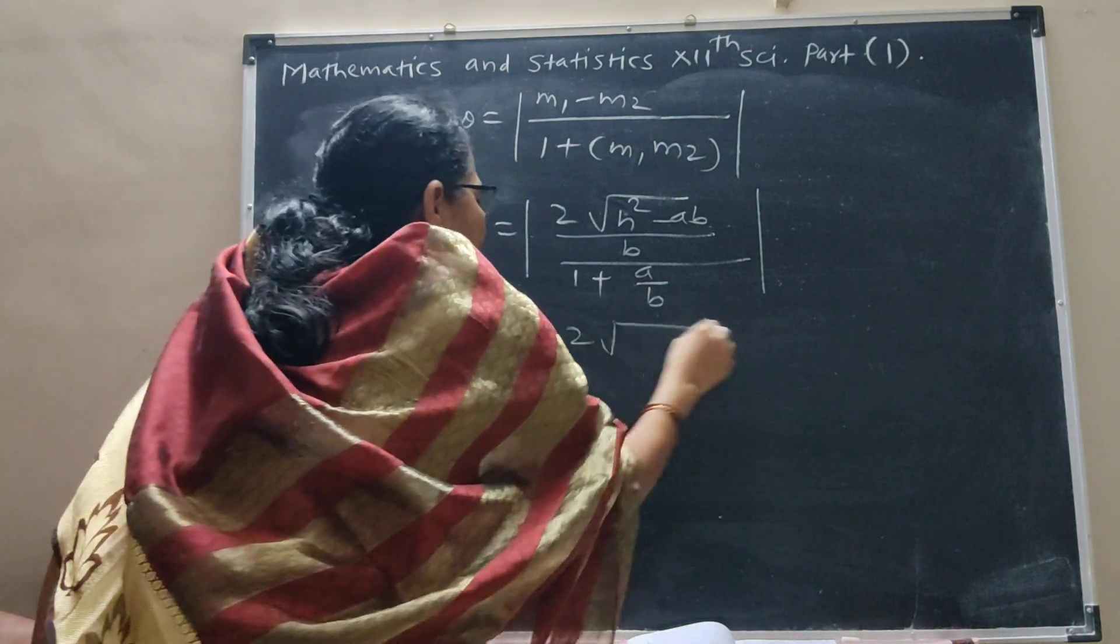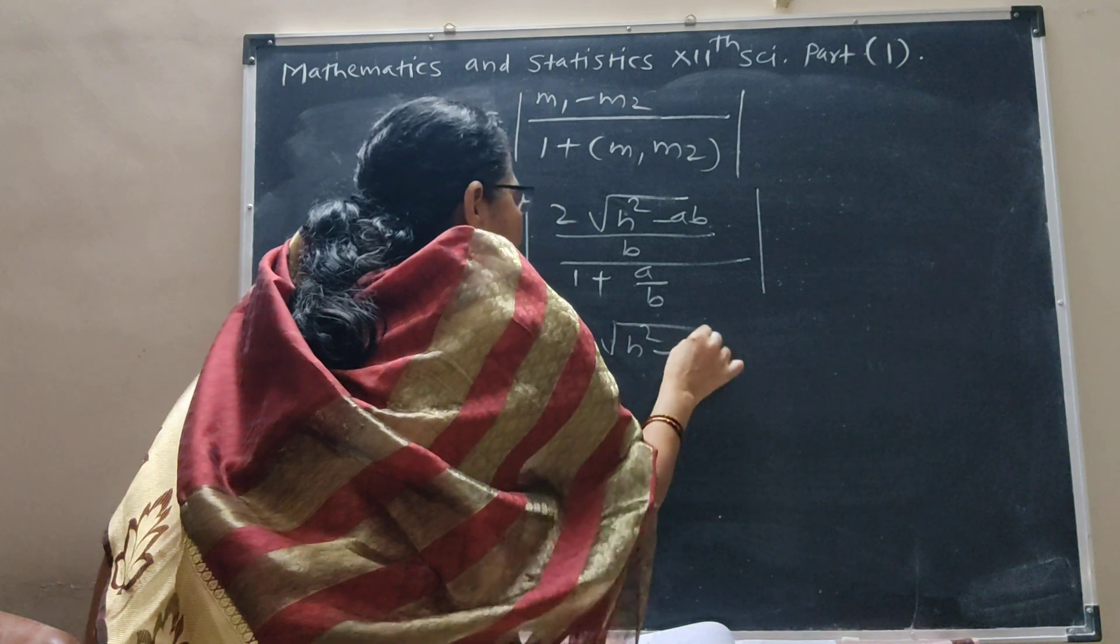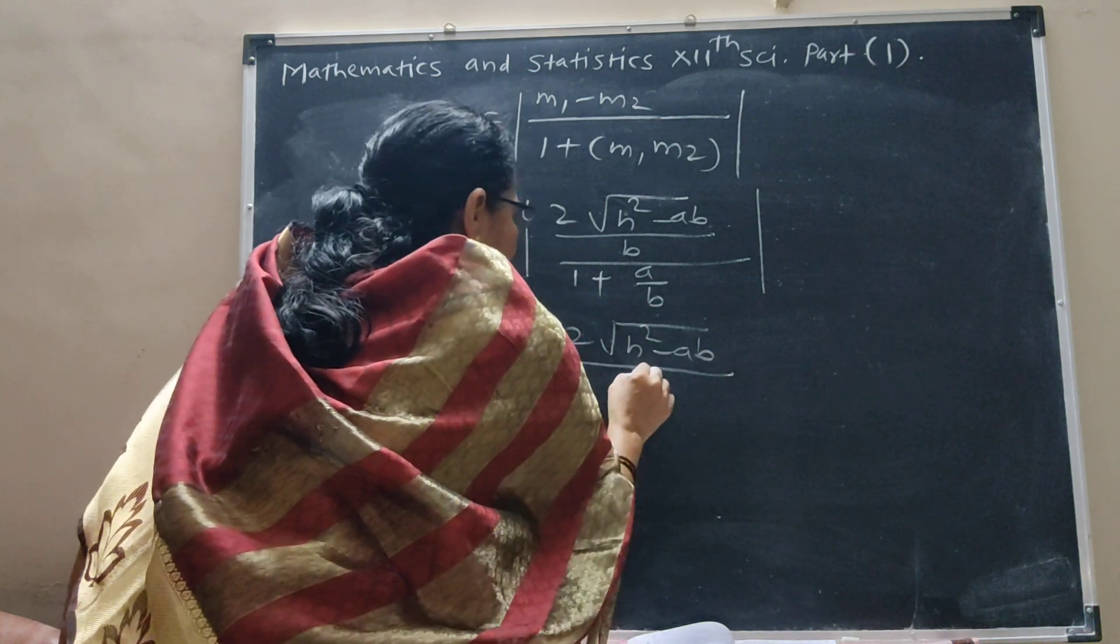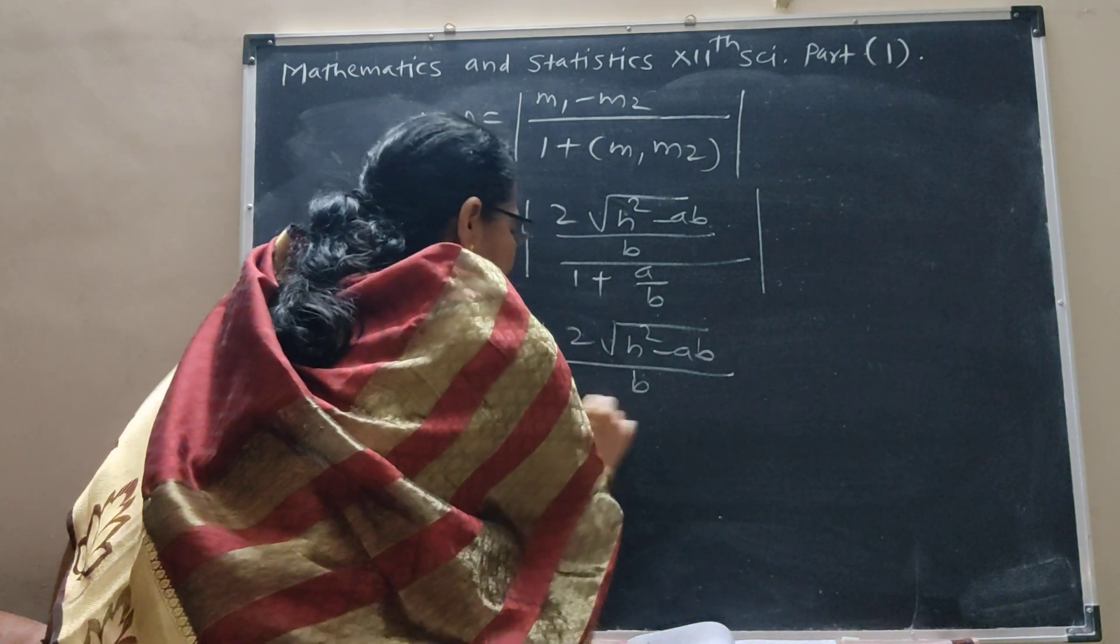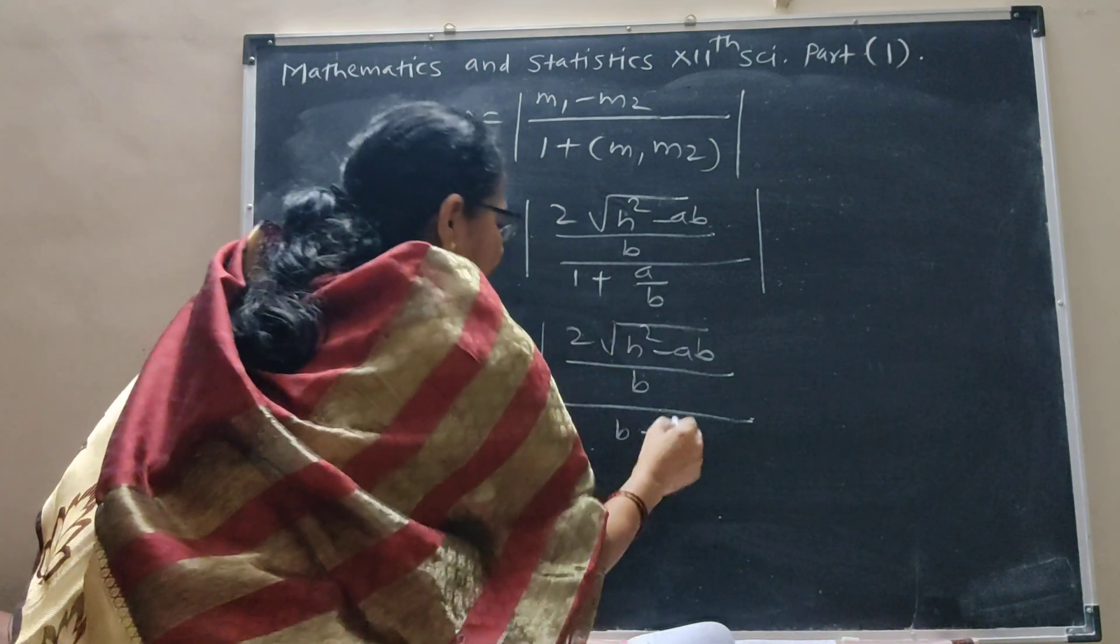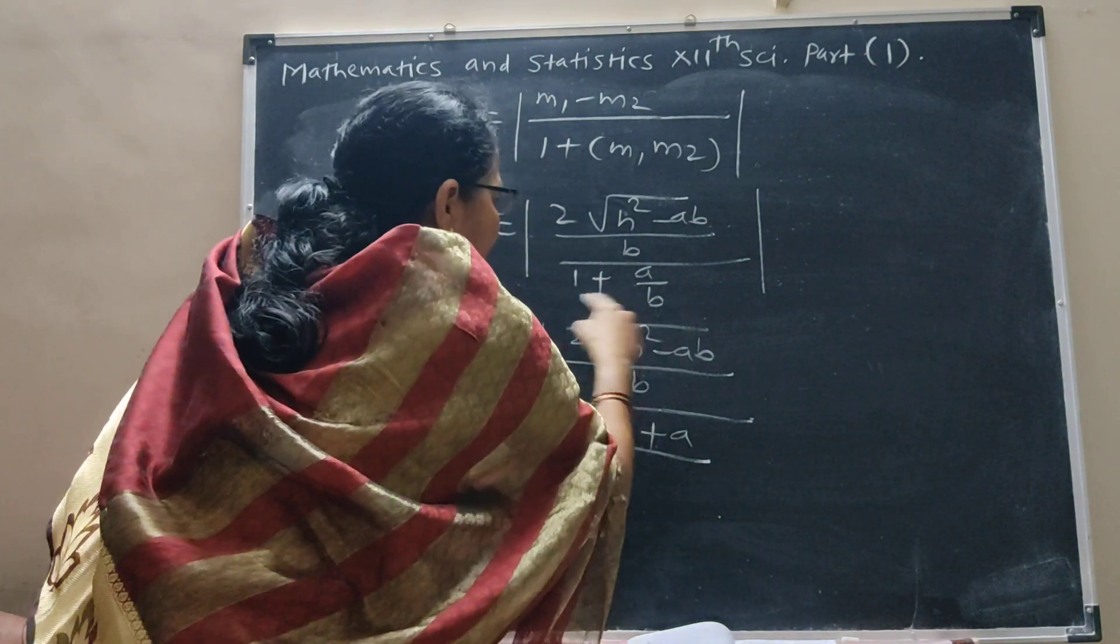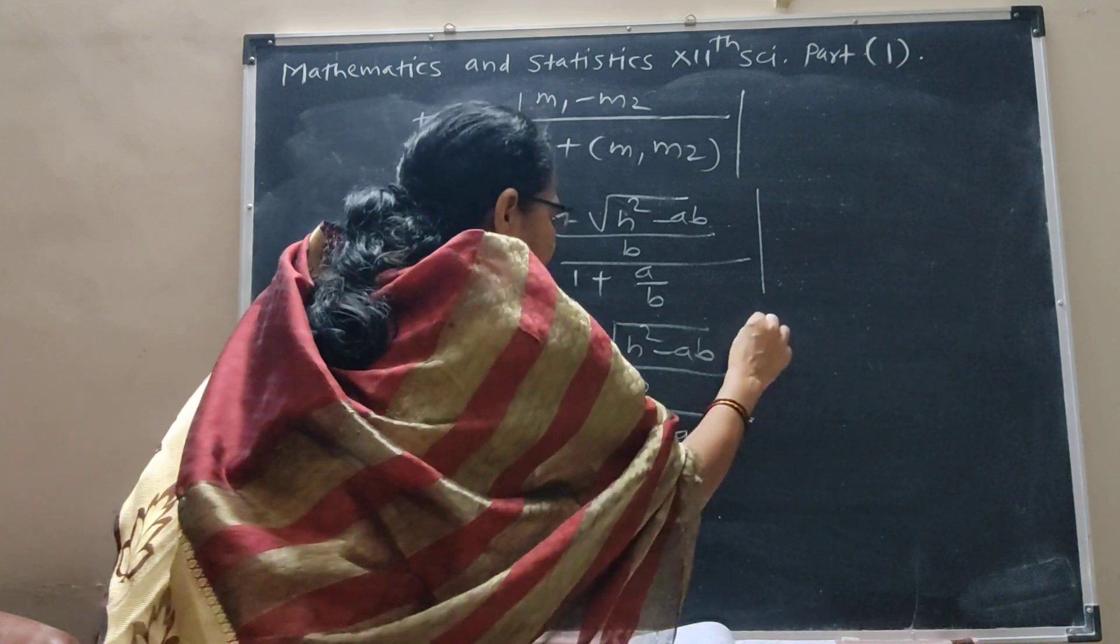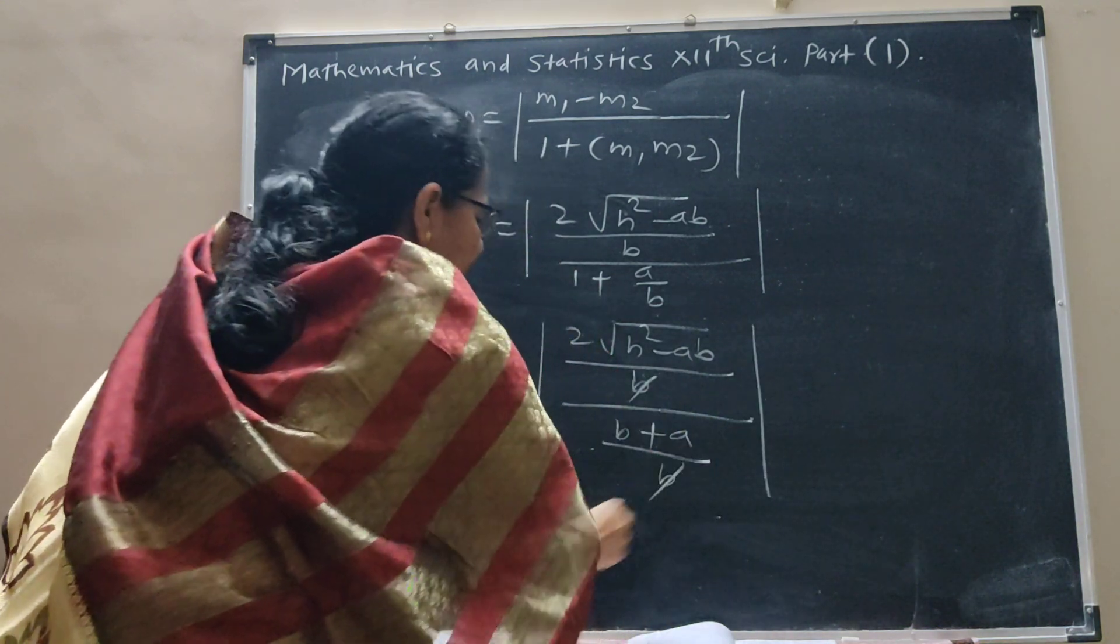2 root h square minus ab upon b. At the denominator, cross product b plus a, the denominator b cancels.